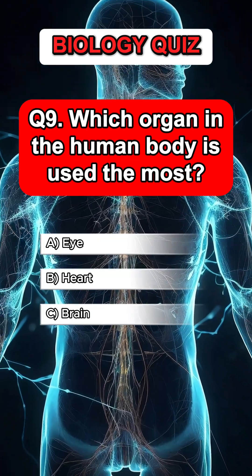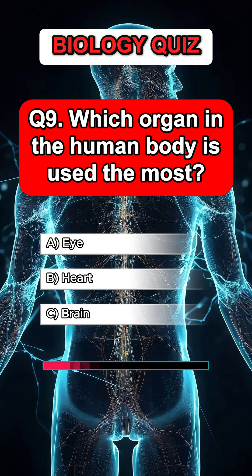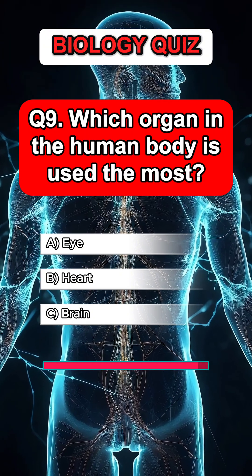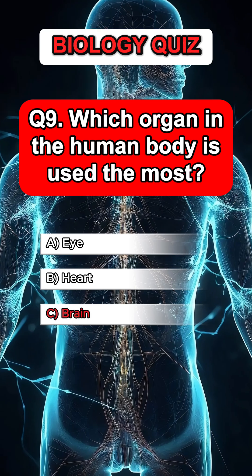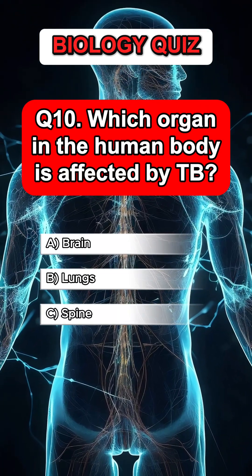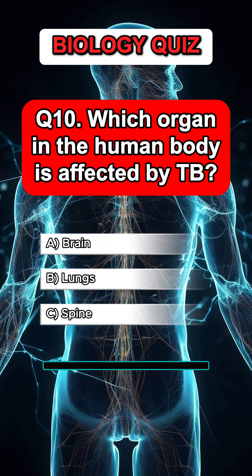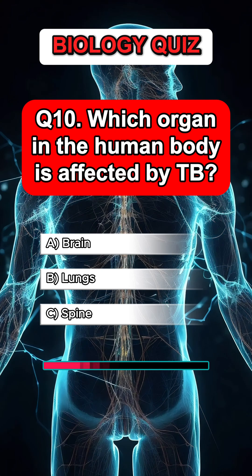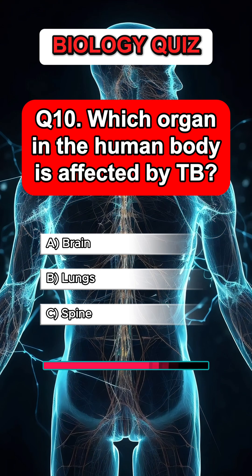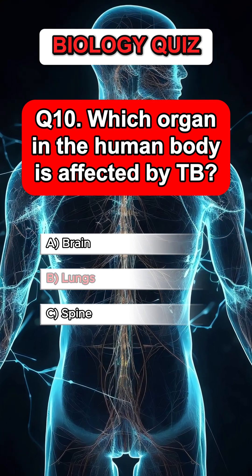Question 9. Which organ in the human body is used the most? Answer C. Brain. Question 10. Which organ in the human body is affected by TB? Answer B. Lungs.